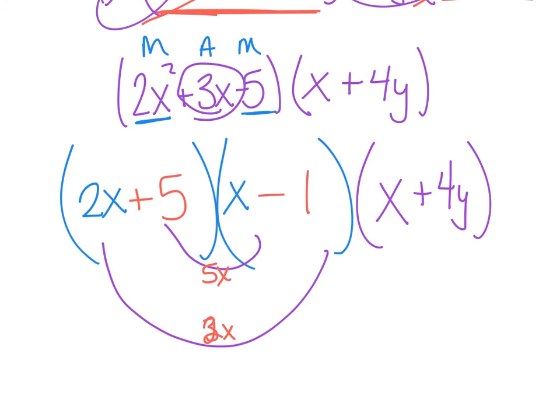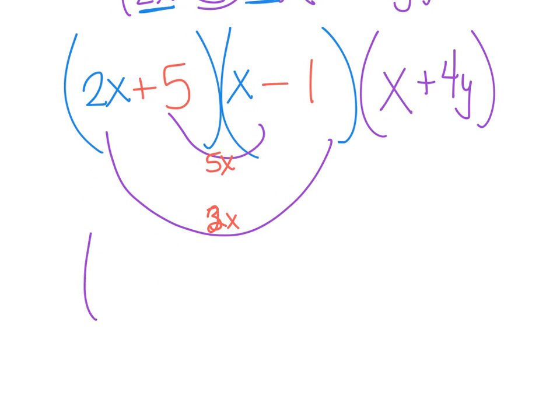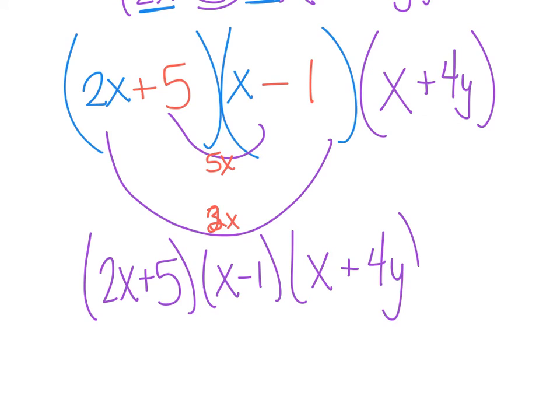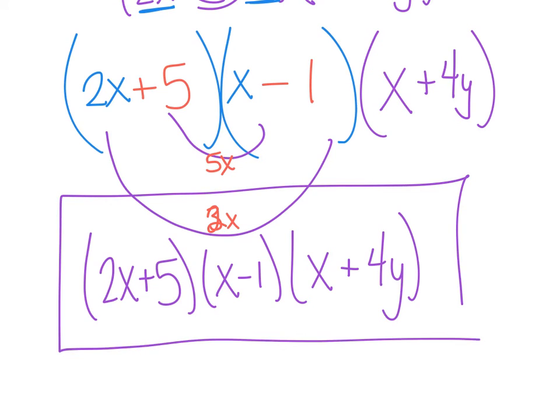This bear here, nothing to pull out, no GCF, nothing fancy, so just times x plus 4y. I just want to be very clear what my factors are. I have 2x plus 5 times x minus 1 times x plus 4y. And it didn't say solve, so please make sure you don't solve unless it asks you to.